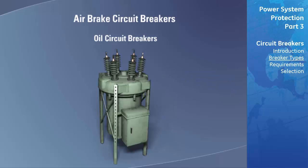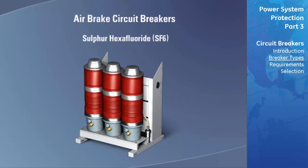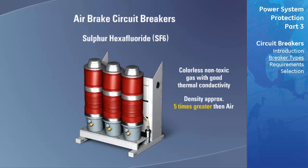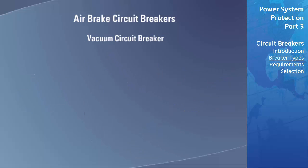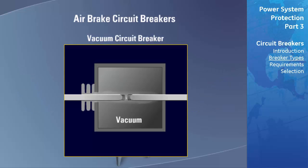Sulfur hexafluoride (SF6) gas is an alternative to air as an interrupting medium. SF6 is a colorless, non-toxic gas with good thermal conductivity and density approximately five times that of air. It is chemically inert up to temperatures of 150 degrees Celsius and will not react with metals, plastics, or other materials commonly used in high-voltage circuit breakers. The principle of operation is similar to air blast breakers, except that SF6 gas is not discharged into the atmosphere.